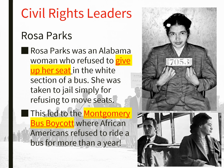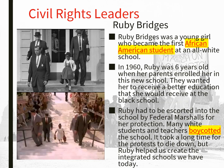Ruby Bridges is another person who came out of this movement. Ruby Bridges was a young girl who became the first Black American student at an all-white school. She had to be escorted in and out by federal marshals in 1960 when she was six years old. Her parents enrolled her in the new school because they wanted her to receive a better education than she would get at the Black school — again, separate but definitely not equal. Many white students and teachers boycotted the school, but Ruby helped create the integrated schools we have today.